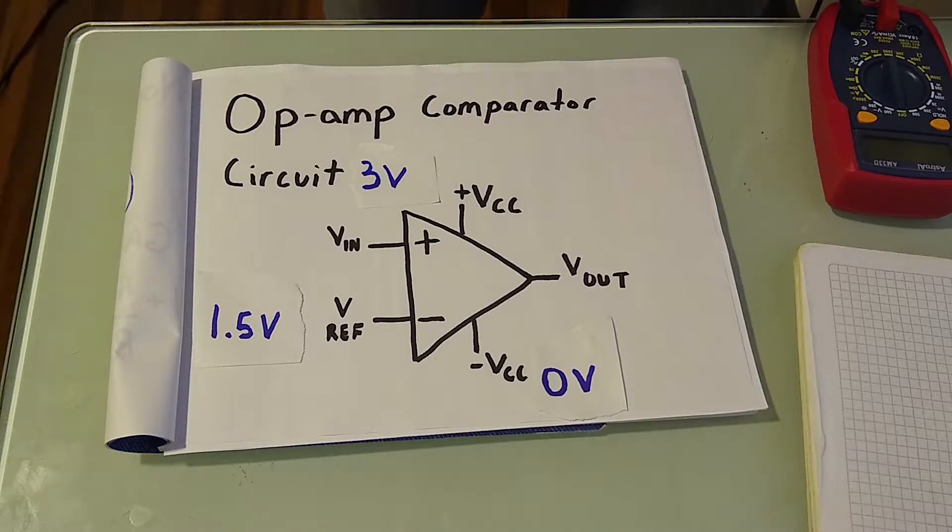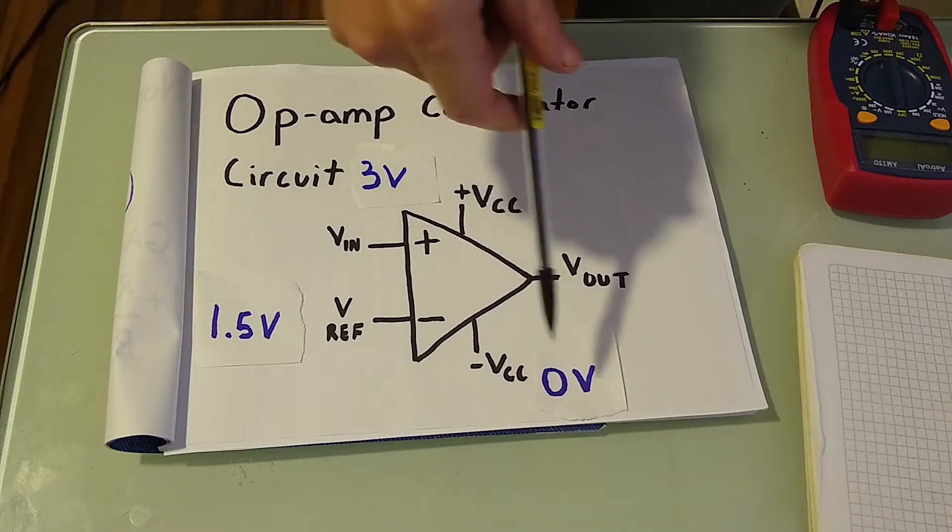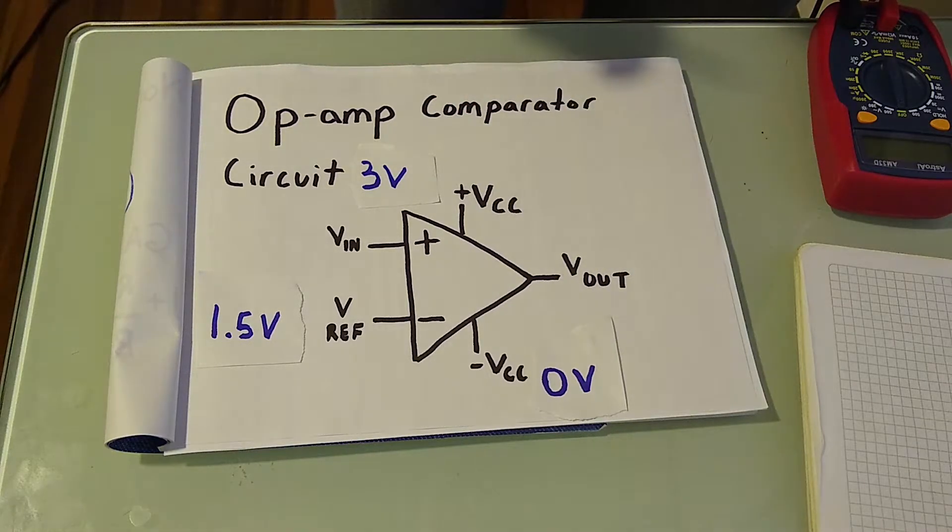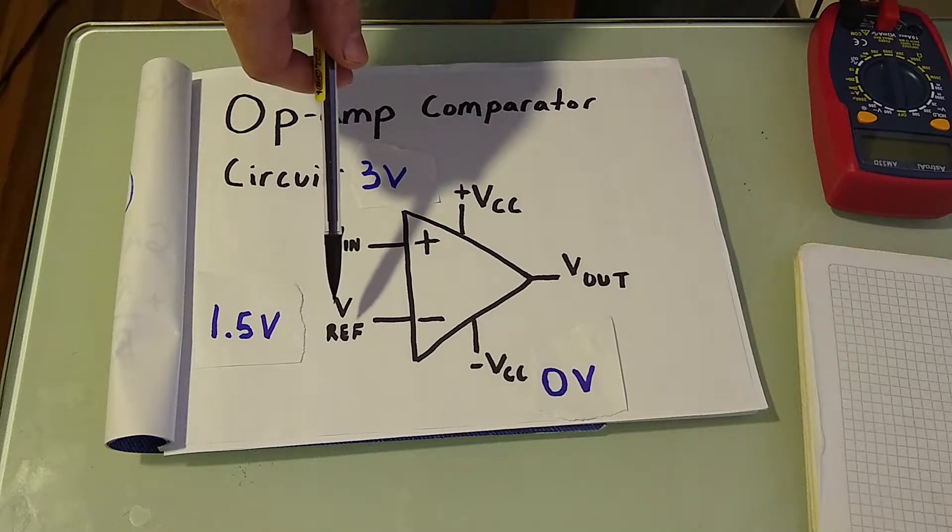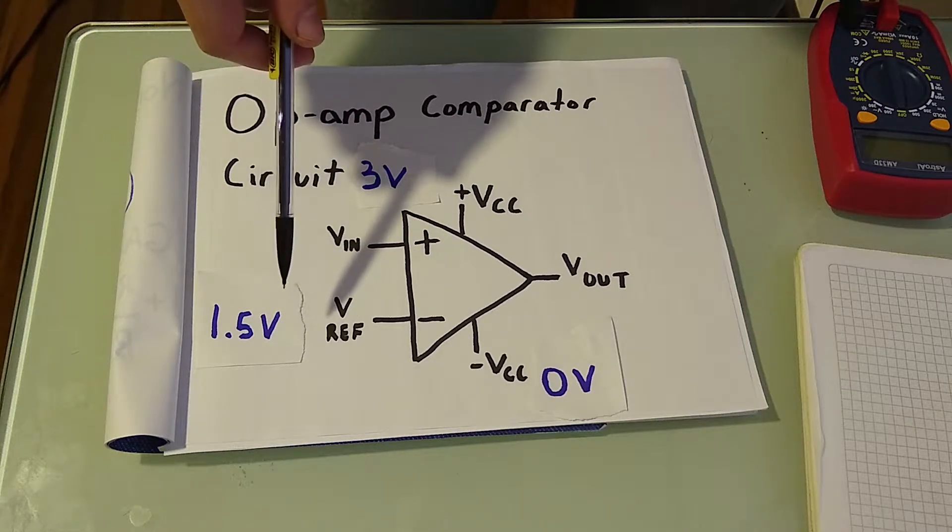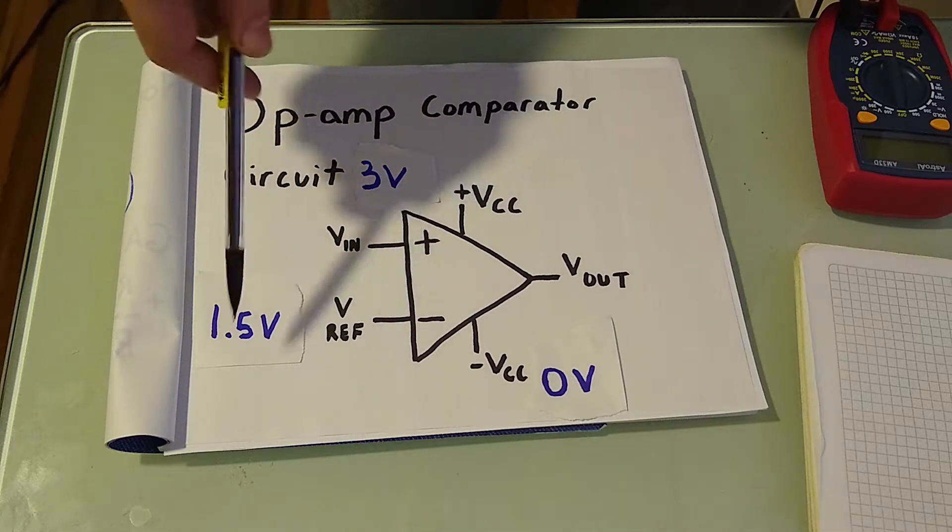Now for a quick example. In this circuit we have a positive supply going into the op-amp at three volts. Our negative supply is zero volts or grounded. And here our input for voltage reference is 1.5 volts. We can use a voltage divider to accomplish that.